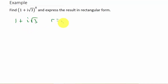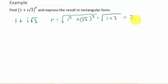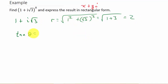We want to convert 1 plus i square root of 3 into trigonometric form. The first thing we need is r. Remember, r is equal to the square root of x squared plus y squared. That's the square root of 1 squared plus square root of 3 squared, which is the square root of 1 plus 3, giving us the square root of 4. So r equals 2. Then we use the fact that tangent theta equals y over x. The complex number is in the form x plus y times i.